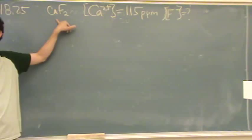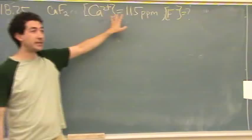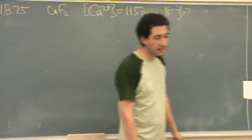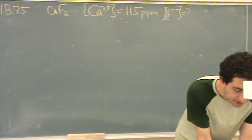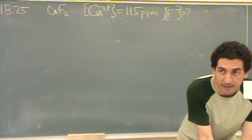Here, so in problem 18.25, we have this substance, calcium fluoride. We have the concentration given in ppm. We want to know this concentration. The key words here are it's saturated in calcium fluoride. That's chapter 18's way to say it's in equilibrium.